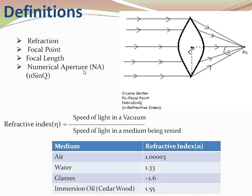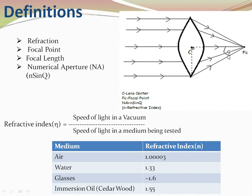Numerical aperture is a mathematically calculated formula. To understand it, we need to learn about the intake angle first. The intake angle is the angle between the two farthest rays focusing on the focal point. For numerical aperture (NA), we take the sine value of half the intake angle. So NA equals the refractive index multiplied by the sine of half the intake angle.